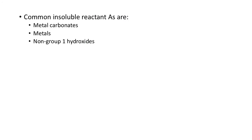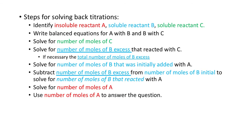Common insoluble reactants A are metal carbonates, metals, and non-group 1 hydroxides. The steps to remember: first, identify everything; then write balanced equations for A with B and B with C; start with your known moles of C; get the moles of B excess; then get the moles of B initial; subtract to get moles of B used; then solve for moles of A by stoichiometry; and finally use the moles of A to get a mass or percentage.